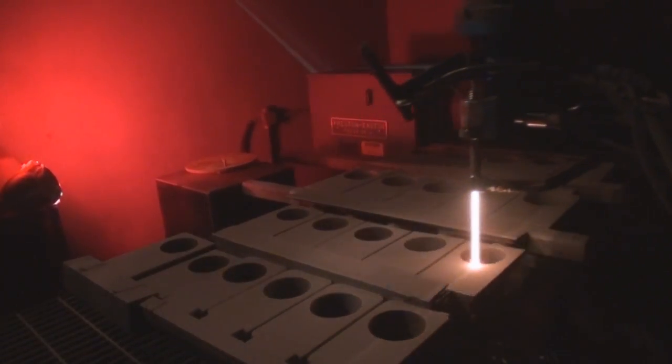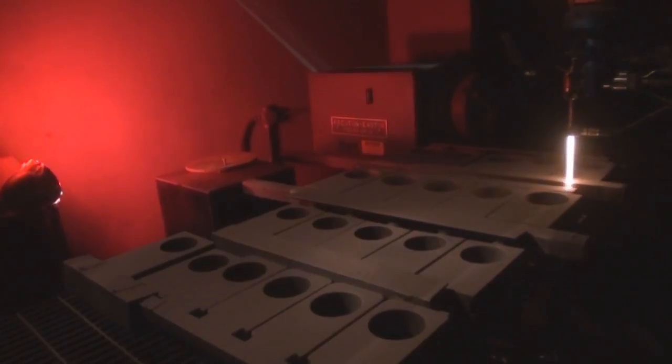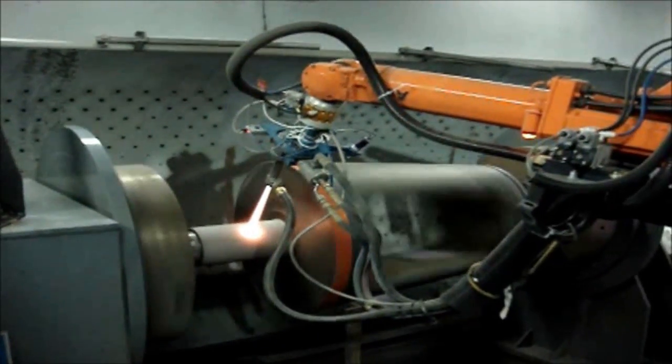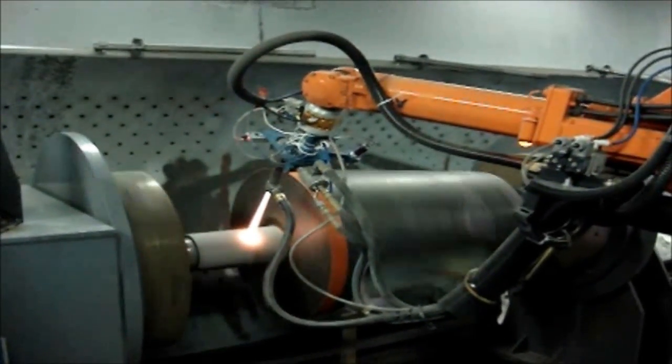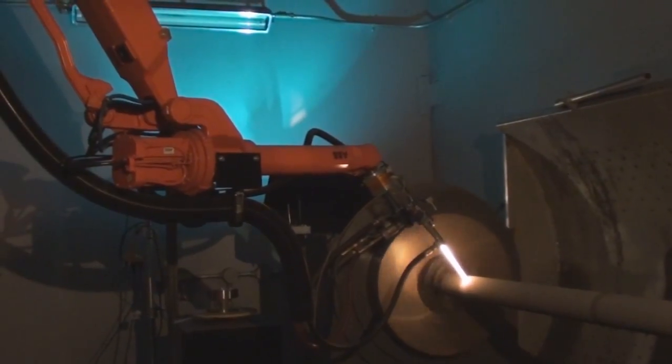After we have tested the powder, it is sent to our robotic thermal spray facility where it is applied to parts or test coupons. At this point, we can perform additional testing on the applied coating itself.